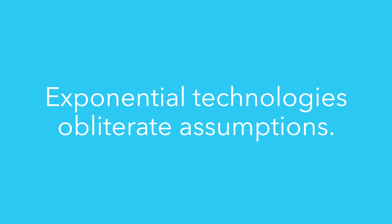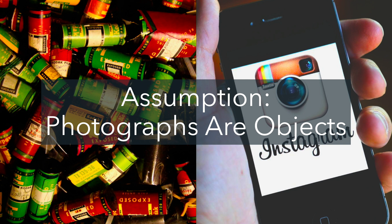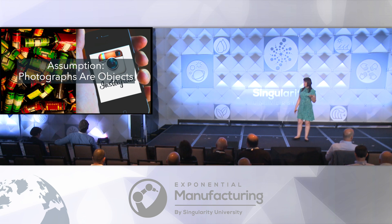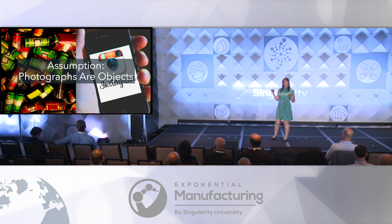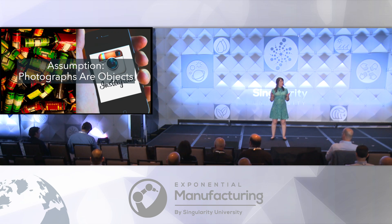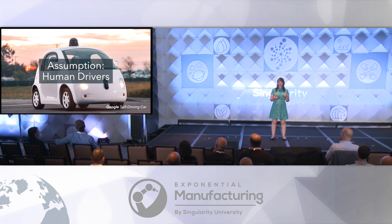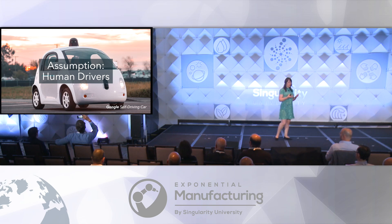What do I mean by that? If you looked at Peter Diamandis' example of Kodak — one of his quintessential examples — what digital photography did was completely destroy the assumption that photographs are physical objects. Self-driving cars obliterate the assumption that humans need to drive.